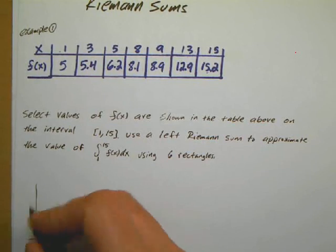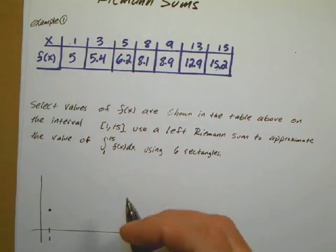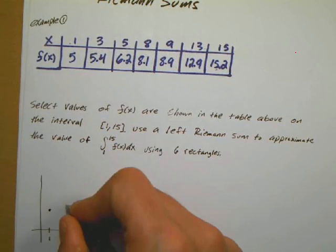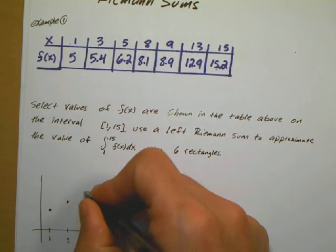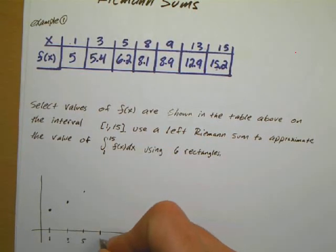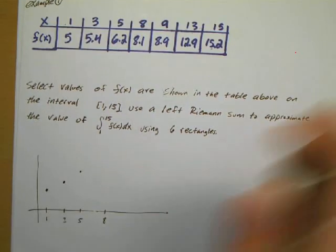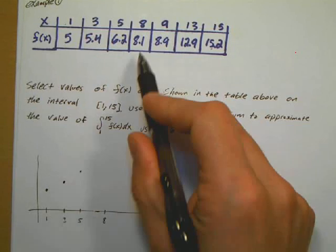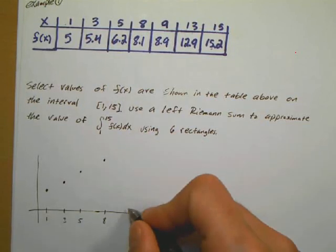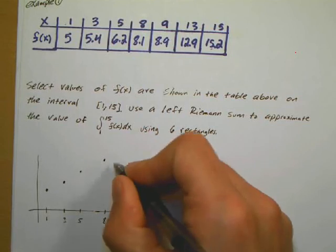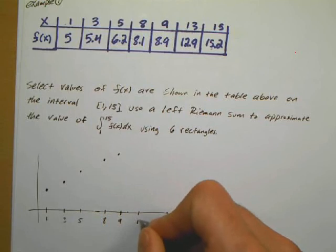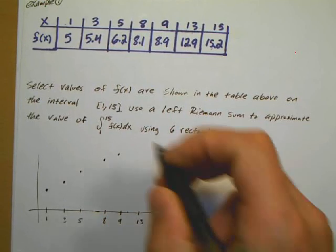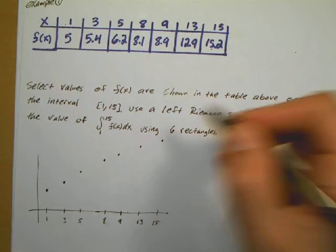Over here at x=1, the height is 5. Over here at x=3, the rectangle is a little bit higher. The next one is at 5, and 6.2 is a little bit above that. At x=8, the rectangle has a height of 8.1, so it's even higher. At x=9, it's 8.9, so a little bit higher than that. And then at 13, it's 15. I can see that it's a steadily increasing function.